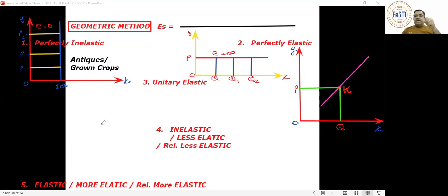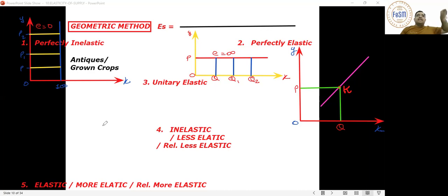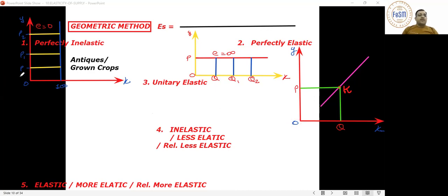Have you ever pulled a cow's tail? If you pull it straight back towards the origin, the cow comes back exactly as far as your elbow goes. I'm extending the supply curve backwards — like pulling the tail — and see where it touches. In this case I've designed it to touch the origin.